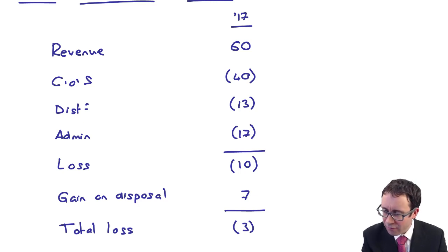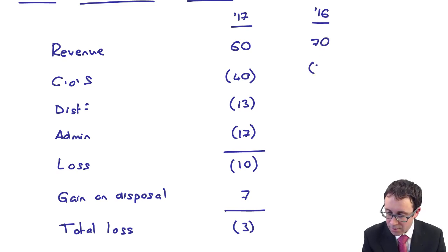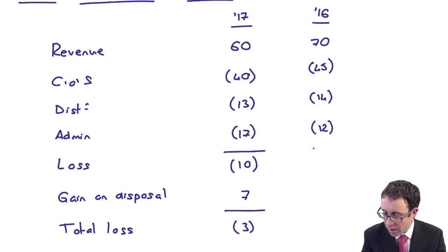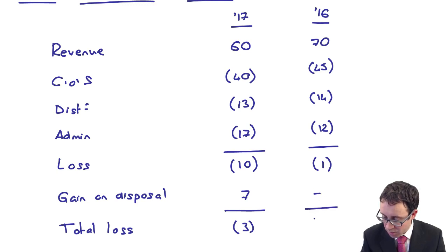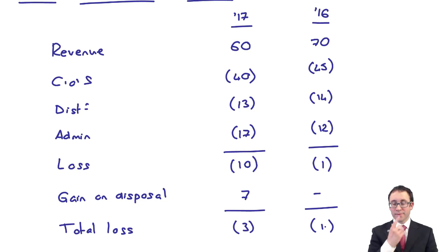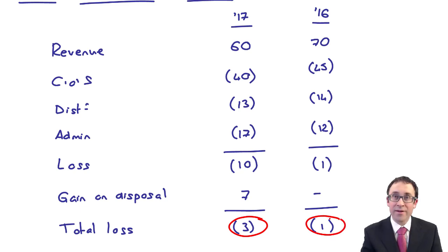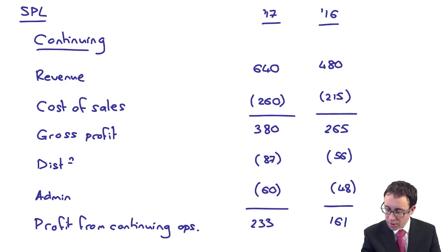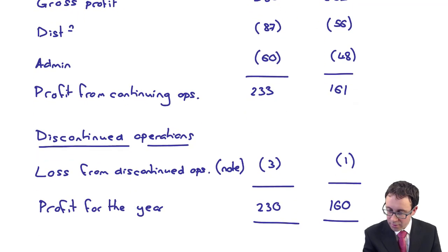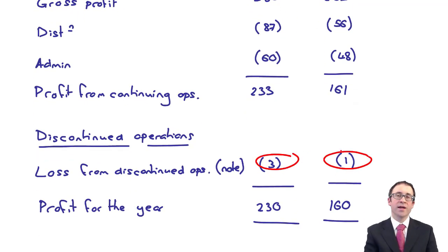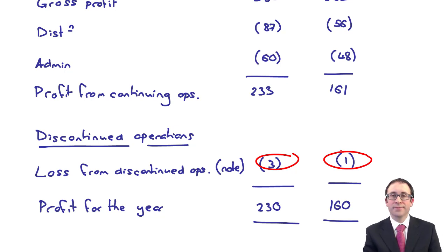For the prior year 2016: revenue was 70, cost of sales 45, distribution costs 12, and there was no gain or loss on disposal — giving a loss of 1. Those figures tie in exactly to what you have on the face of the financial statements for discontinued operations. That completes the chapter — see you in the next one.